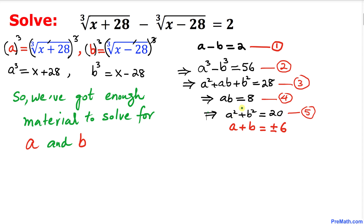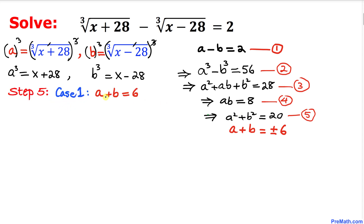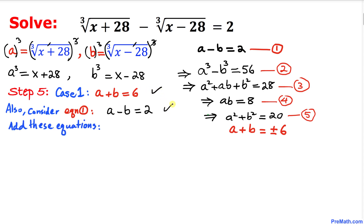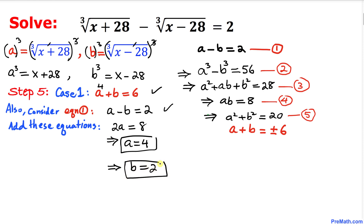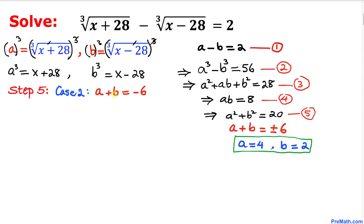Case one: a + b = 6. Combined with equation one, a - b = 2, we add the two equations to get 2a = 8, so a = 4. Plugging back in gives b = 2. So for case one, a = 4 and b = 2.